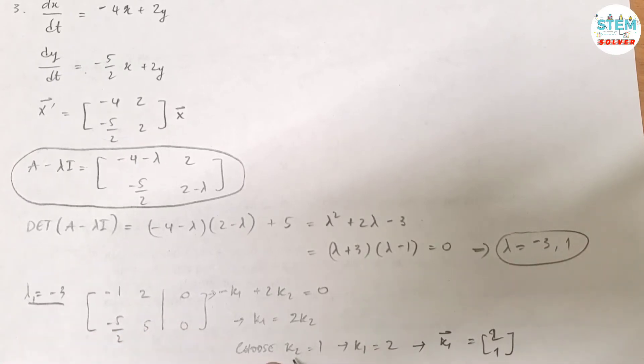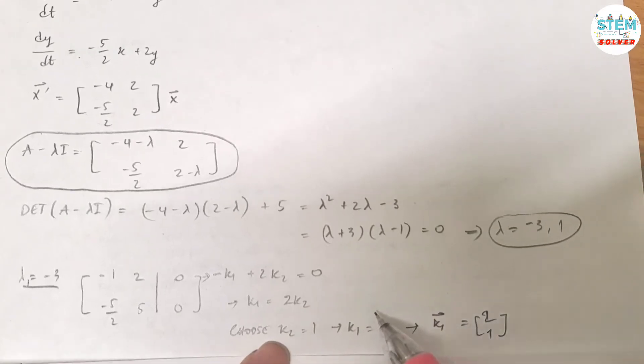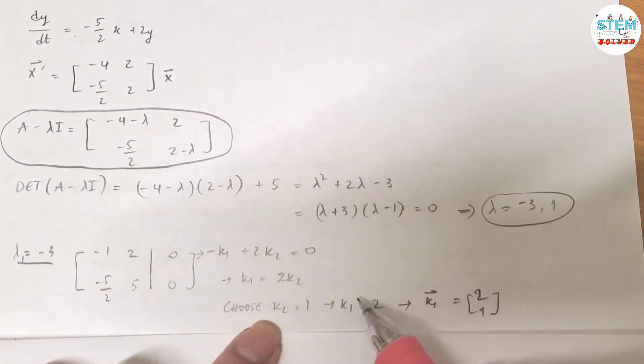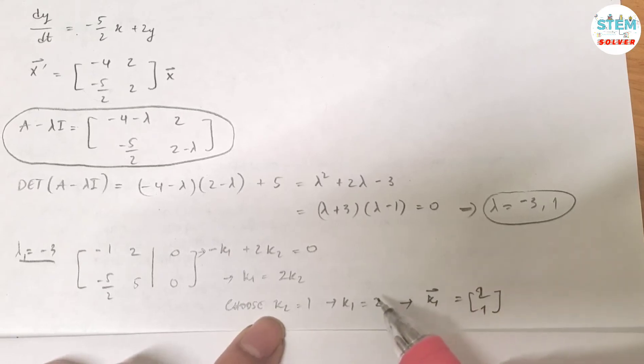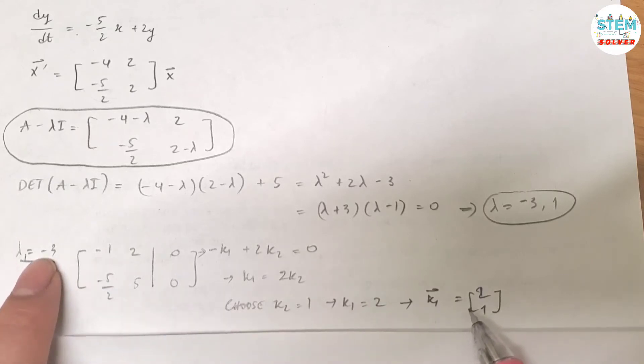You can choose whatever value for k2 or k1 and then solve for the other value. But I like to solve for the value that I can give the standard value of 1. Doing this, I got the vector k for lambda equals negative 3 is 2, 1.